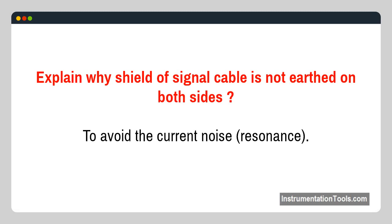Explain why the shield of a signal cable is not earthed on both sides. To avoid current noise resonance.